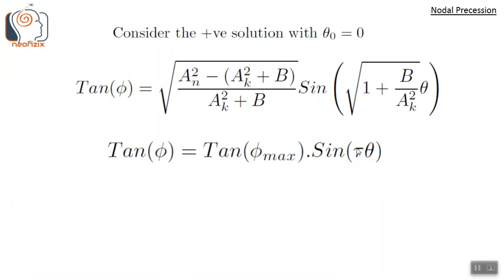We focus on the tau (τ) factor, which is the coefficient of the longitudinal angle θ. Tau is equal to √(1 + b/A_k²). So the nodal precession rate depends on the k-component of the angular momentum determined by initial conditions, and on the b factor coming from the modified gravitational potential.